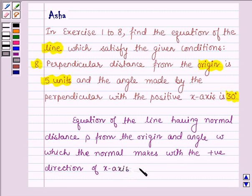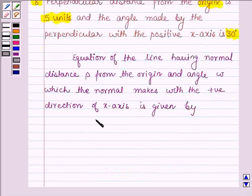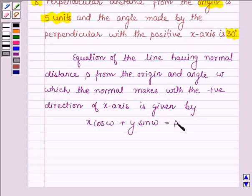This is given by x cos omega plus y sin omega equals P. So with the help of this idea we are going to solve the above problem. This is our key idea.